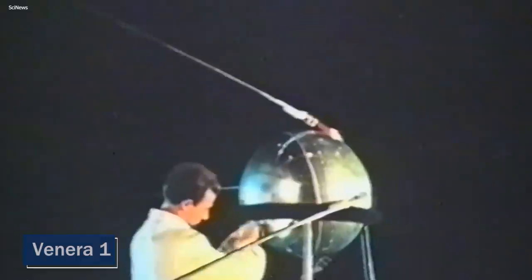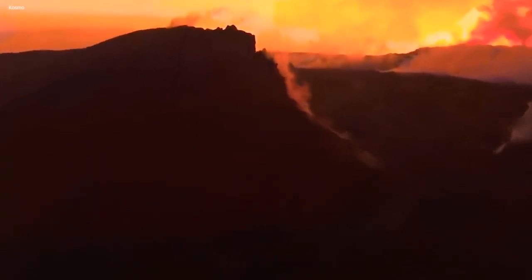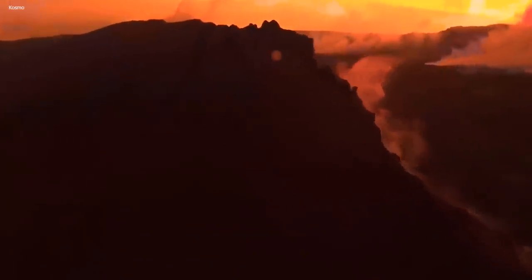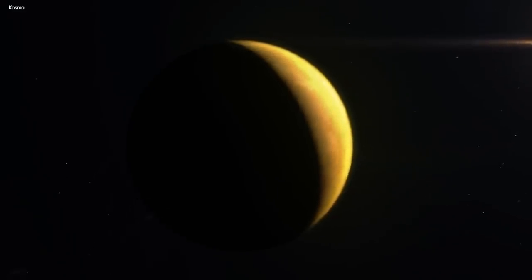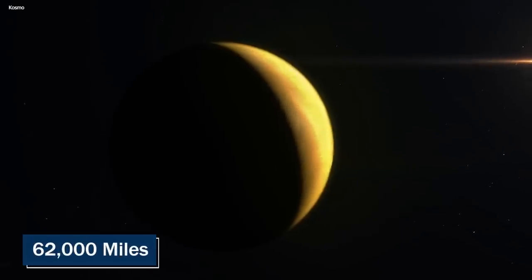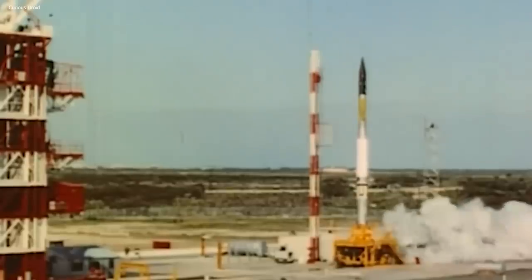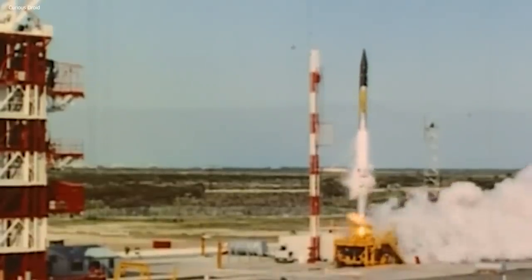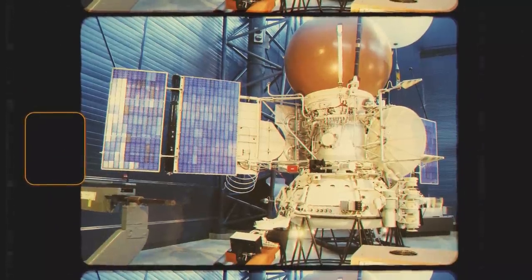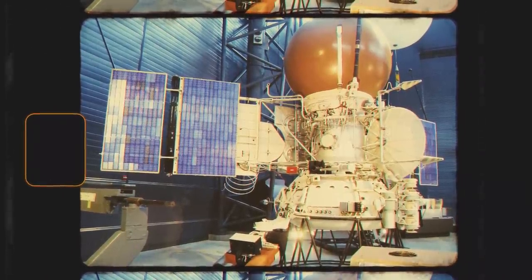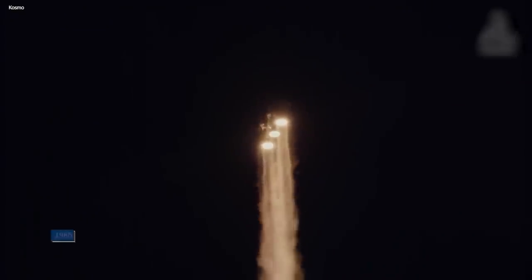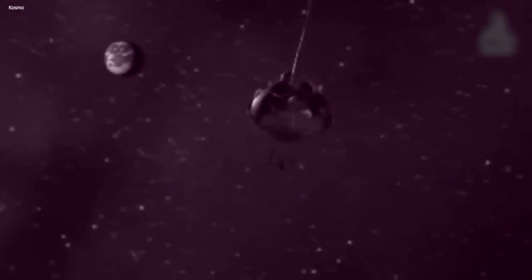The spacecraft, named Venera 1, was launched in 1961, but unfortunately, it didn't quite make it to Venus. It flew past the planet, missing it by a whopping 62,000 miles. But the Soviet Union didn't give up. They sent another spacecraft, Venera 2, in 1962, but it too fell short and didn't make it to the planet. But they say the third time's a charm, right? The Soviet Union launched Venera 3 in 1965, and this time, it actually made it to Venus.